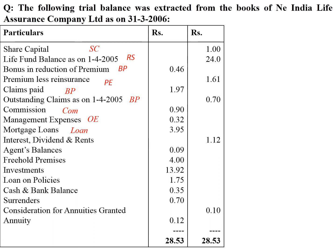Commission goes under the head of commission. Management expenses goes under operating expenses (OE). Mortgage loan goes under loans. Interest, dividend and rents goes under income from investment (IFI). Agent balances goes under operating expenses (OE). Freehold premises goes under fixed assets (FA). Investment goes under investment. Loan on policies and cash and bank balance go under loans and cash and balance (CB). Surrenders go under benefit paid (BP). Consideration for annuities goes under income from investment. Annuities goes under benefit paid.